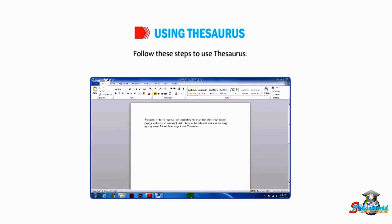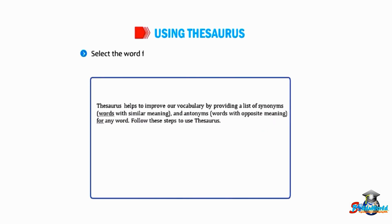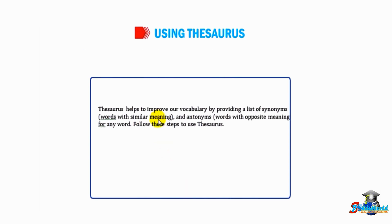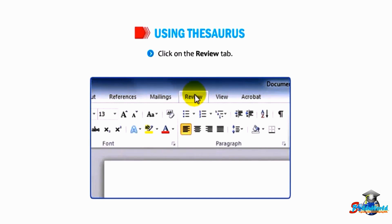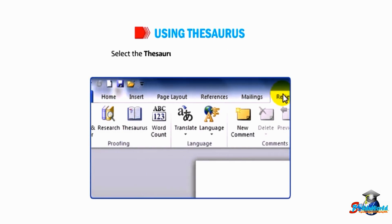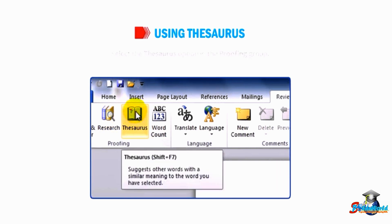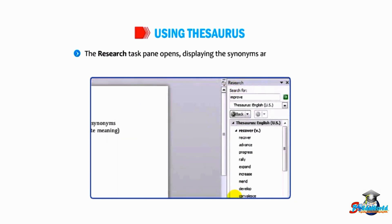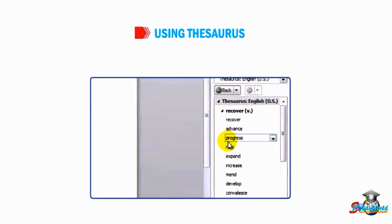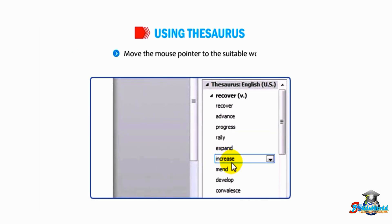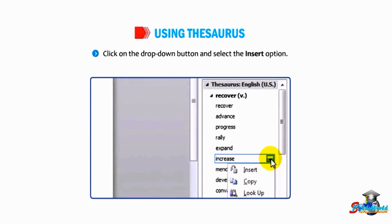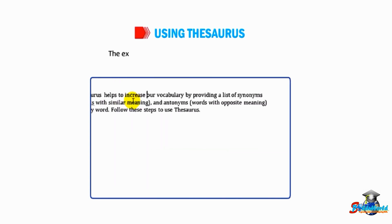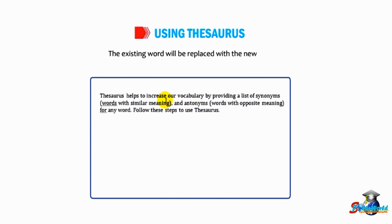Follow these steps to use Thesaurus: select the word for which you want to find synonyms or antonyms. Click on the Review tab and select the Thesaurus option in the Proofing group. The Research task pane opens displaying the synonyms and antonyms. Move the mouse pointer to the suitable word, click on the drop-down button, and select the Insert option. The existing word will be replaced with the new one.